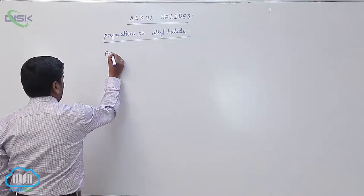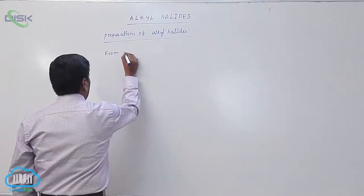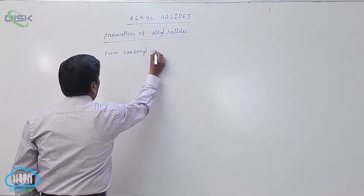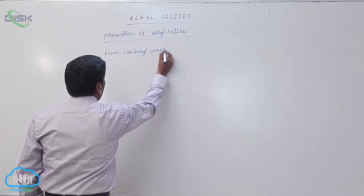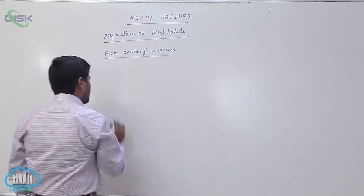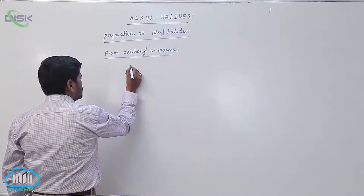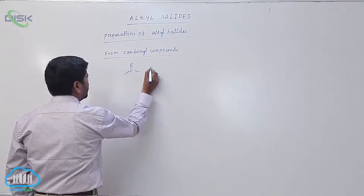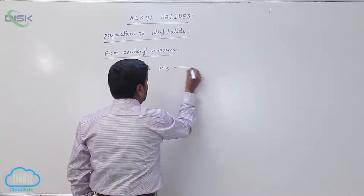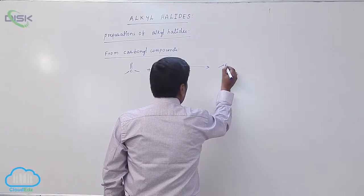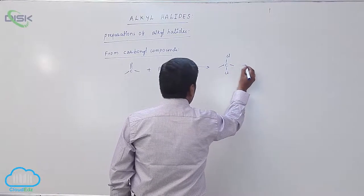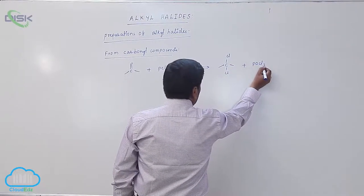Last one from carbonyl compounds. When carbonyl compounds react with Phosphorus Pentachloride, they form a geminal dichloride, with loss of POCl₃.